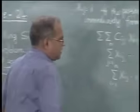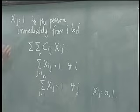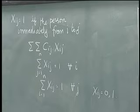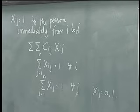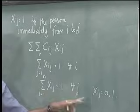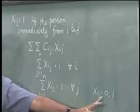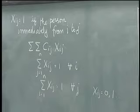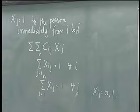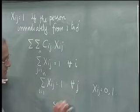The formulation so far looks like the assignment problem. The key difference is that in the assignment problem, due to unimodularity, we set x_ij ≥ 0, whereas in a TSP we require x_ij ∈ {0,1}. We need to add additional constraints to the TSP — these are called subtour elimination constraints.